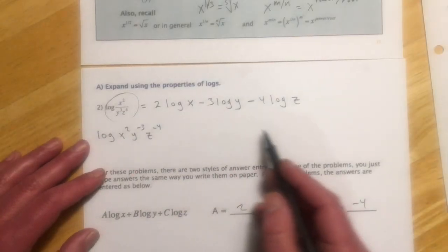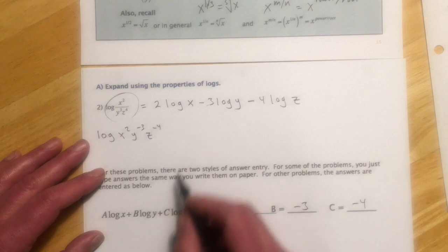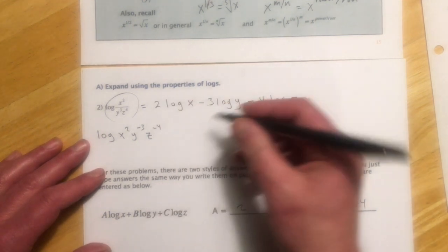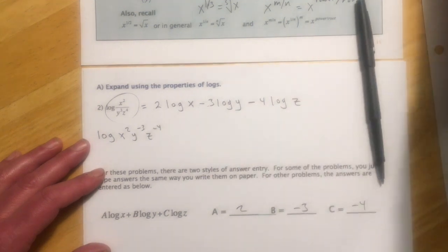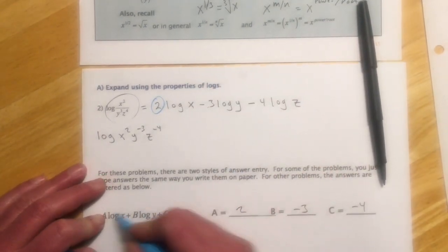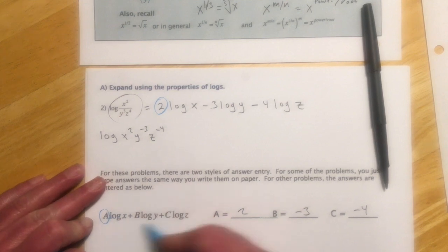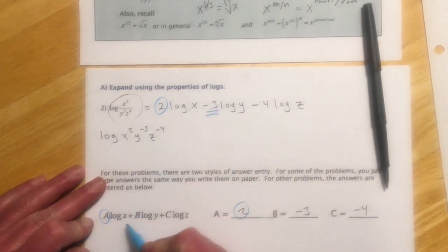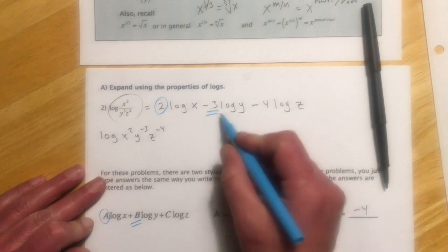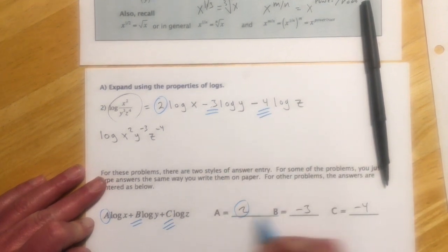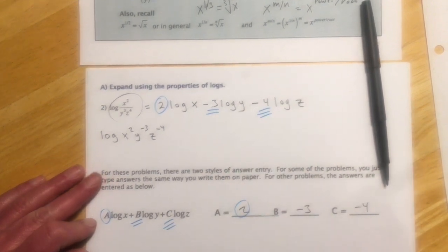For entering answers, they give a template and you match up the coefficients. So a is 2, the next coefficient is negative 3, and the last one is negative 4.